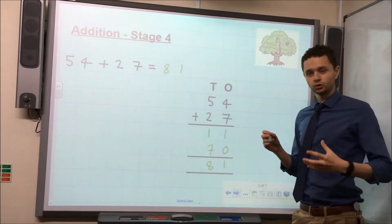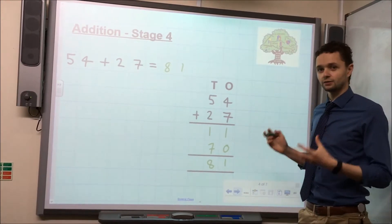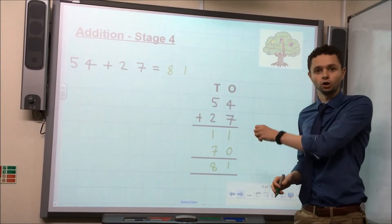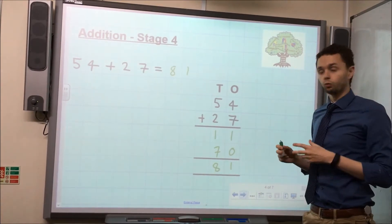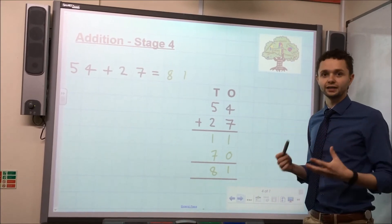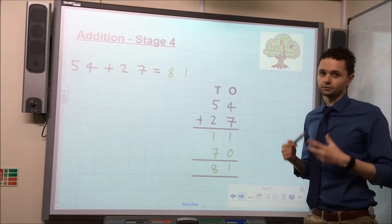Now, I cannot stress the importance of children understanding the place value in terms of they are adding five 10s and two 10s, and not just five and two. Once they have a secure understanding of that place value, then they are ready for the standard column method, which is stage five.